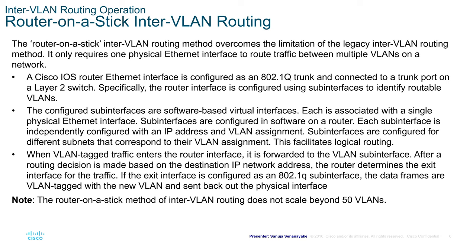When VLAN-tagged traffic enters the router interface, it is forwarded to the VLAN sub-interface. After a routing decision is made based on the destination IP network address, the router determines the exit interface for the traffic. If the exit interface is configured as an 802.1Q sub-interface, the data frames are VLAN-tagged with the new VLAN and sent back out the physical interface. Note that the router-on-a-stick method does not scale beyond about 50 VLANs.